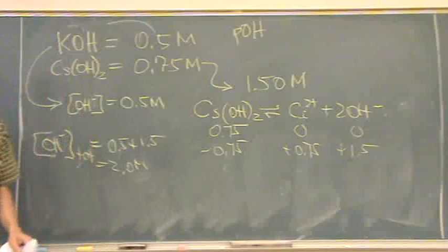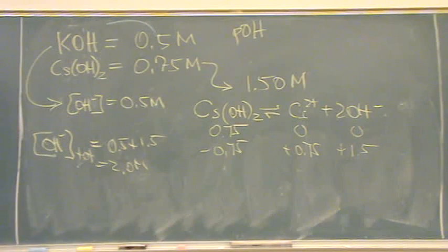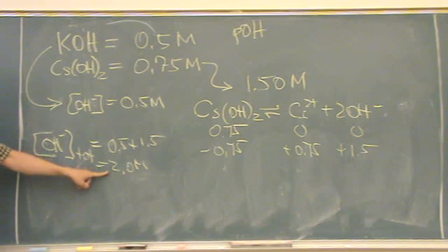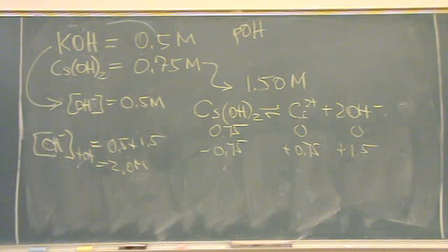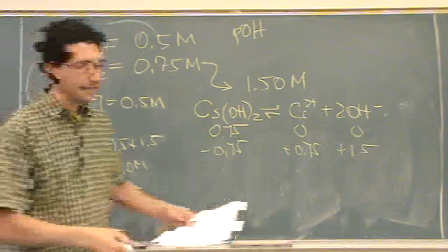So the answer then is B, negative 0.3. Yeah, you take the negative log of this number. And you get negative 0.3. I think if I would have wrote this question, I would have had the answer be a positive number. But yes, you can have pH less than zero, or POH less than zero.